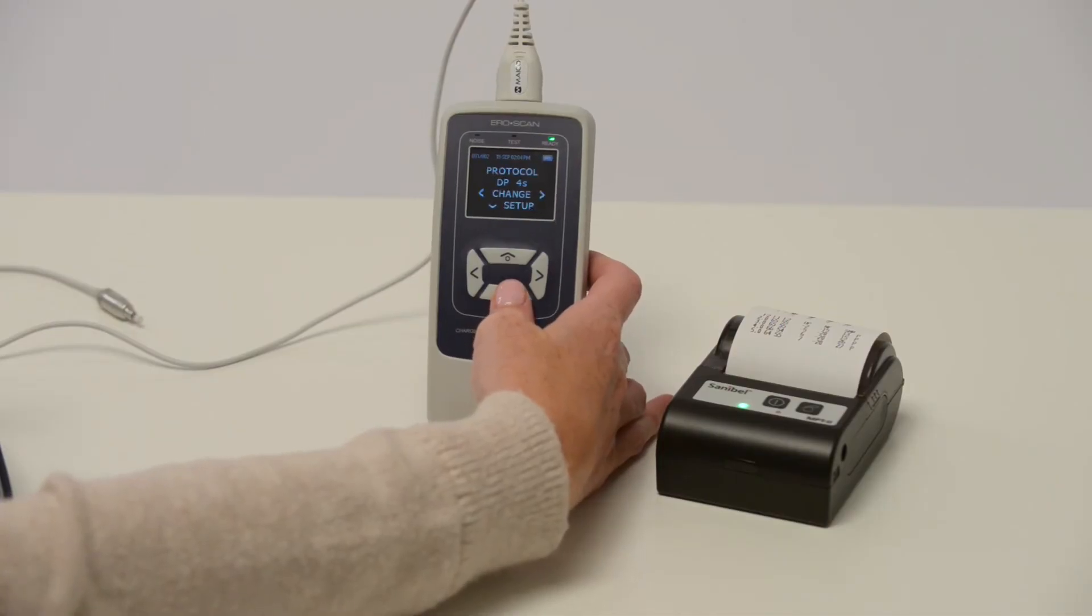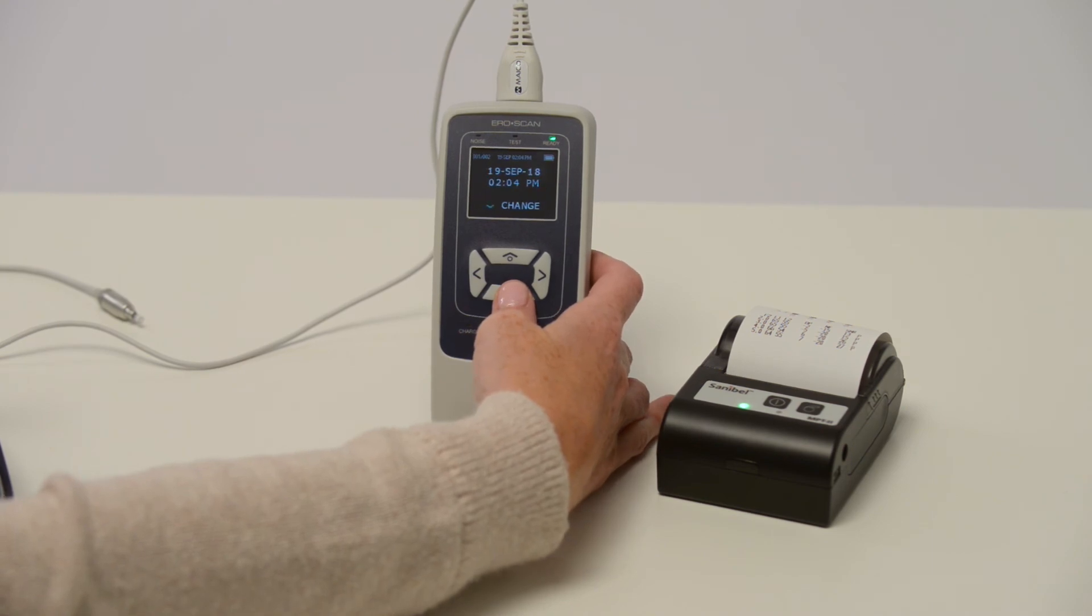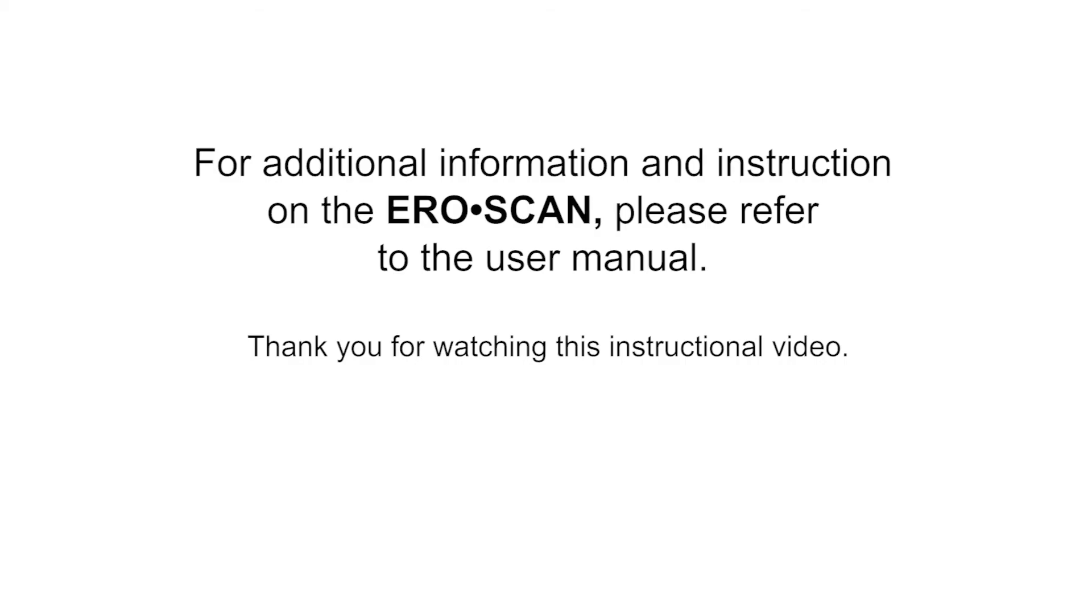There are additional settings on the device. For example, press the down arrow button three times to access the date and time. For additional information and instructions on the AeroScan, please refer to the user manual. Thank you for watching this instructional video.